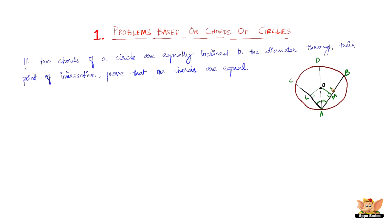Why have we done this construction? The approach is: make this construction with OL perpendicular to AC and OM perpendicular to AB, then form triangles OLA and OMA. We need to prove that the chords are equal, and to do that, we need to prove they are equidistant from the center. We know from a previous theorem that if chords are equidistant from the center, they are equal. So if AC and AB are equidistant — that is, OL equals OM — then they are equal.